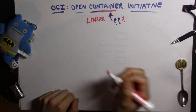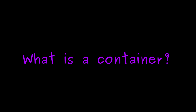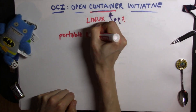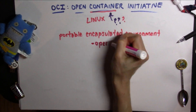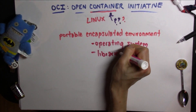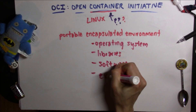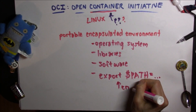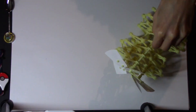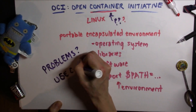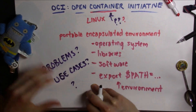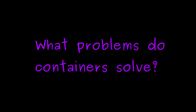Let's do a quick and dirty definition. A container is a portable encapsulation of an environment. It's a really great way for you to package an operating system, libraries, your favorite software, and some special set of environment variables into a package that you can then move and run anywhere. A good way to start building your understanding of containers is to generally outline the problems that containers solve.